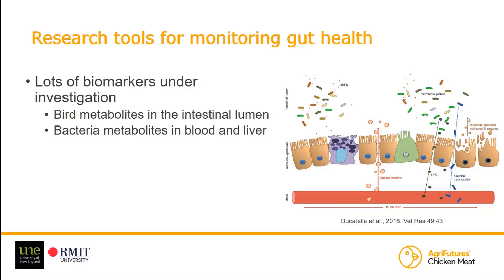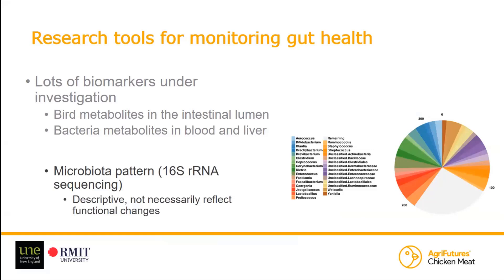There is a third tool that can be used to look more broadly at gut health — not looking at the gut lining like the previous markers, but looking at microbiota patterns using sequencing. It's descriptive; it doesn't indicate permeability in the gut, but there is plenty of research showing that certain patterns of bacteria are more favorable and related to high production, while other patterns are less desirable and linked to lower production.